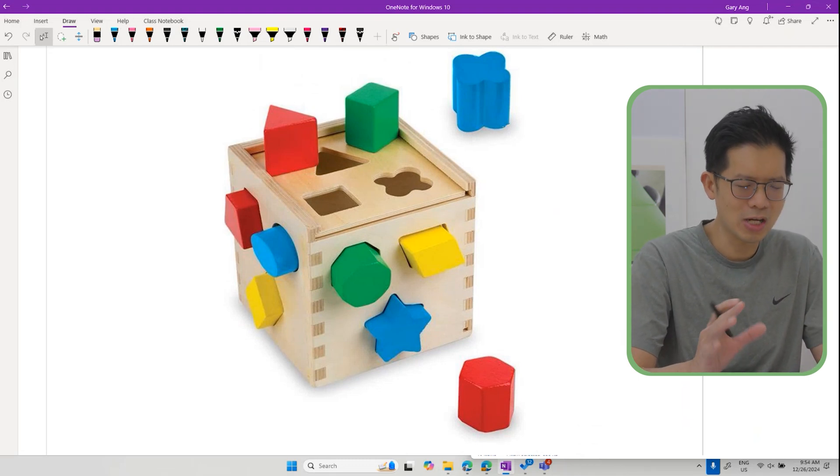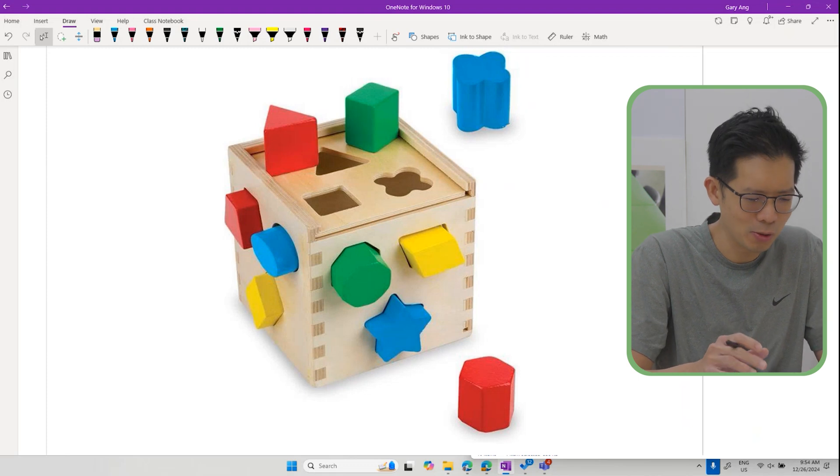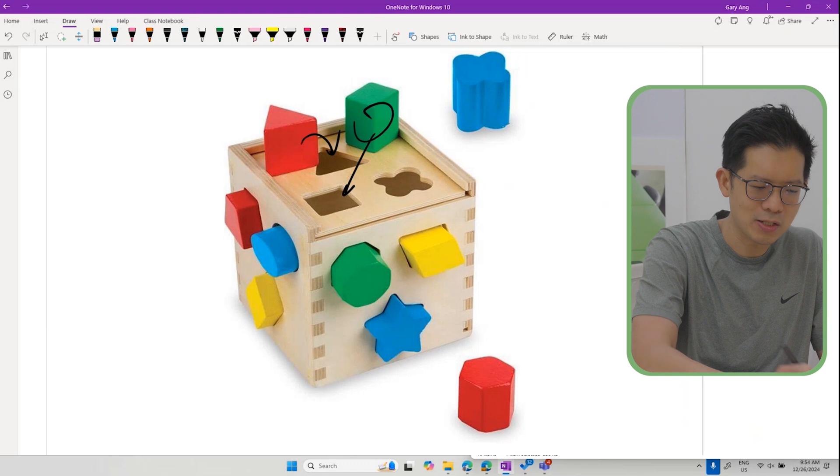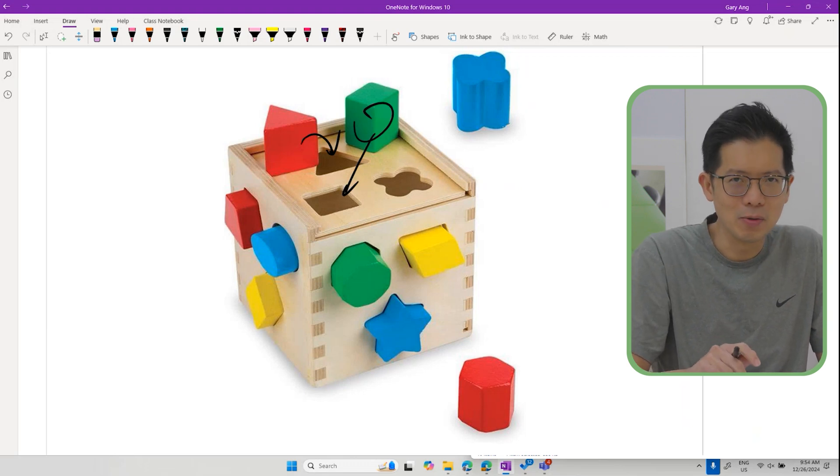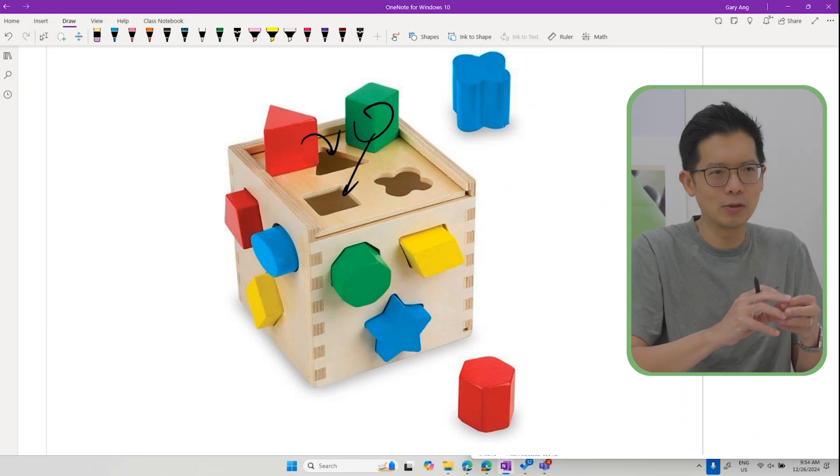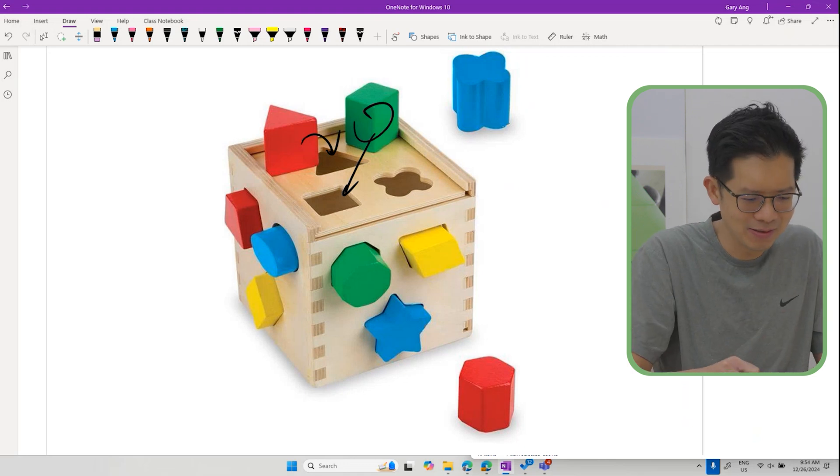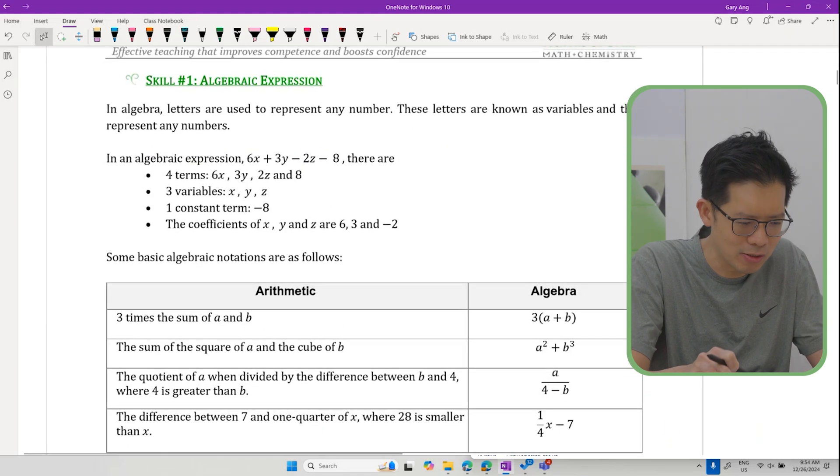Like a little toddler's toy, right? You put the triangle into the triangle slot, you put a square into the square slot. Some part of algebra will be something like this because X represents a value. Once you know the value, you can put the right number into the right slots.